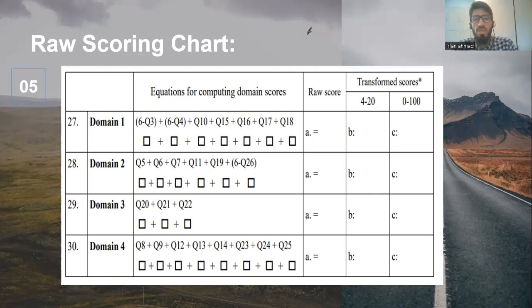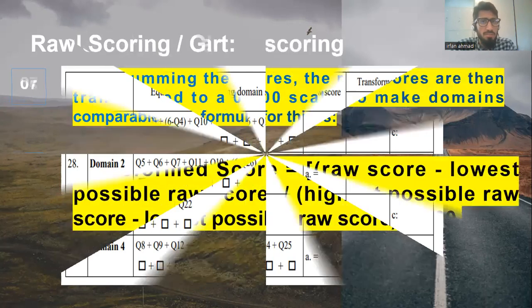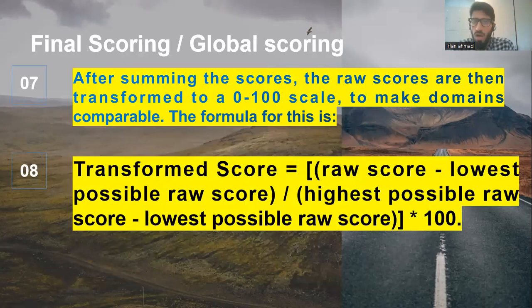Now let's how can we transfer it into zero to 100 scale. After summing the score, the raw score, then transfer to the zero to 100 scales to make the domains comparable. The formula for this is, this is the main formula that I was searching for and no one explained it yet. The transformed score is the raw score you obtain for each domain, raw score minus the lowest possible raw score, divided by highest possible raw score minus lowest possible raw score, multiply by 100. This formula, you have to keep it in mind. This is the formula I found it very difficultly. So you have to keep this on record whenever you are using the WHO quality of life brief.